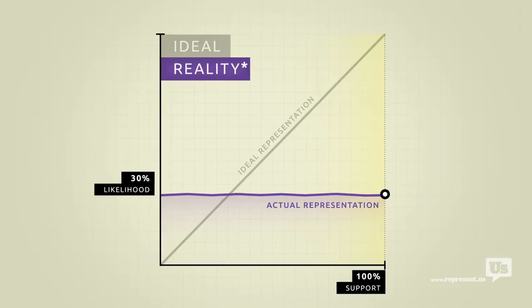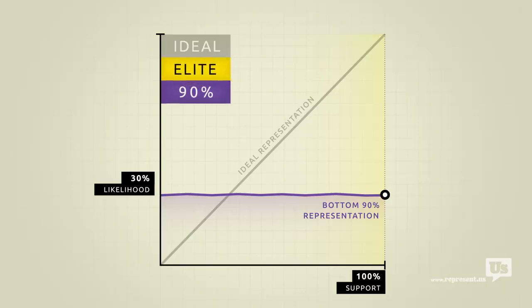This flat line only accounts for the bottom 90% of income earners in America. Economic elites, business interests, people who can afford lobbyists, they get their own line.